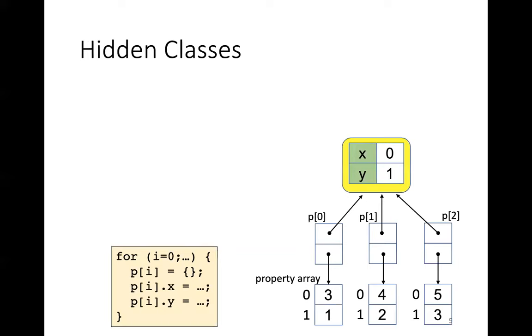Now, I explain the standard hidden classes before going on to our design. Hidden classes let you map from the property name to the location of the value. For example, these P0, P1, and P2 are objects that have this hidden class. This hidden class describes that the location of the property X is at index 0. So, the value of the property X of object P0 is 3.